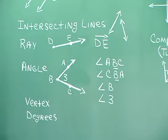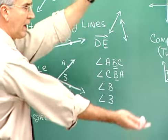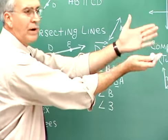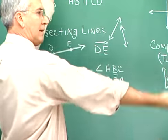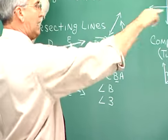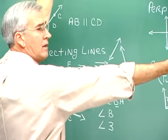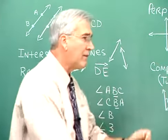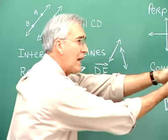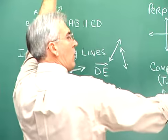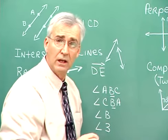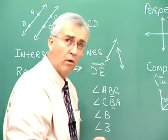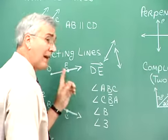Angles are measured in degrees — it is the opening between the rays that's measured. A square corner made with two rays is 90 degrees. If you take two rays and go all the way around and come back to the same place, that's 360 degrees. One-fourth of that gives you the corner, which is a right angle.